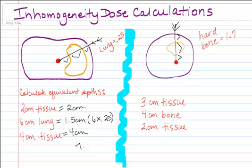So your effective calculation depth is 7.5 centimeters with homogeneity factor versus 12 centimeters that would have been used had you not taken into account the homogeneity factor.